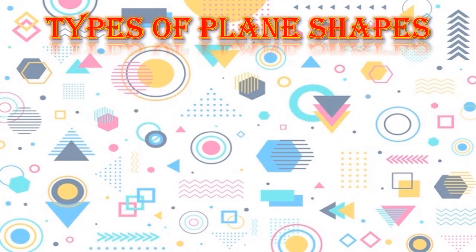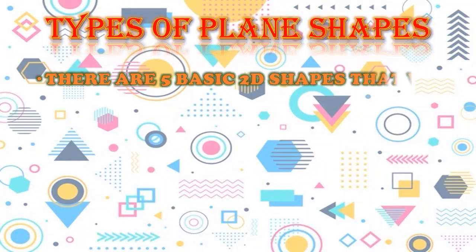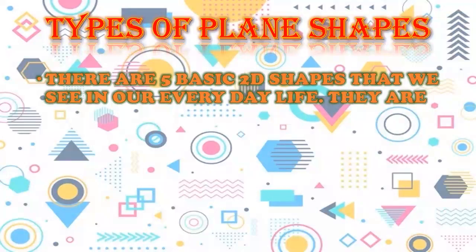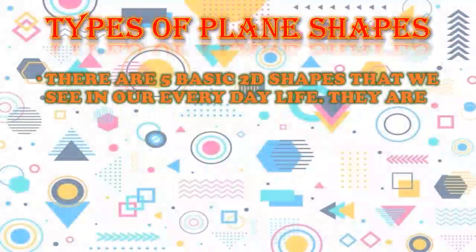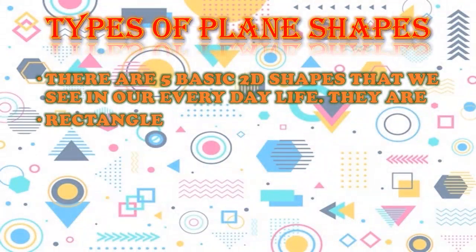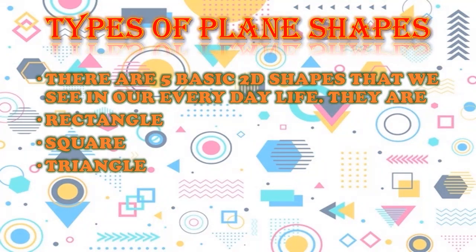Types of plane shapes — there are 5 basic two-dimensional shapes that we see in our everyday life. They are rectangle, square, triangle, circle, and oval.